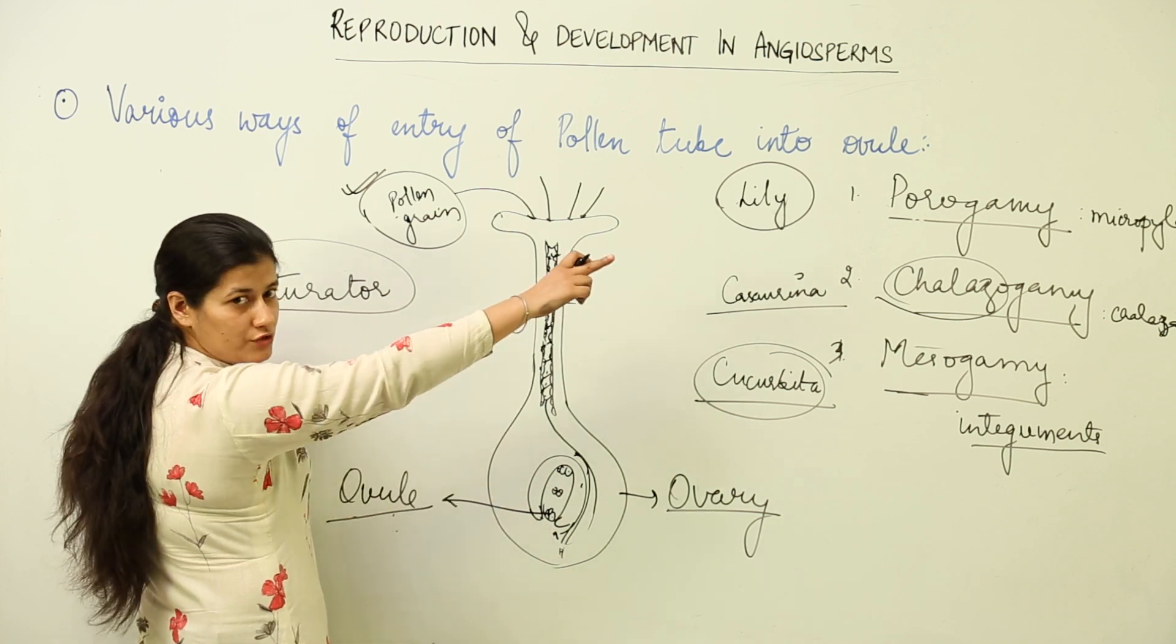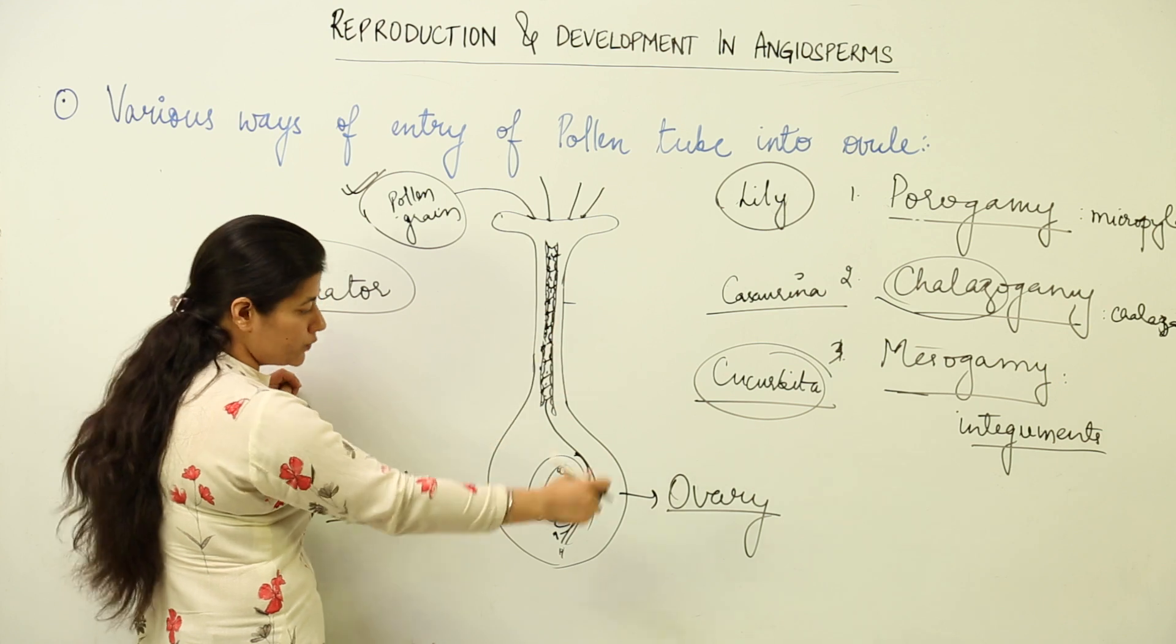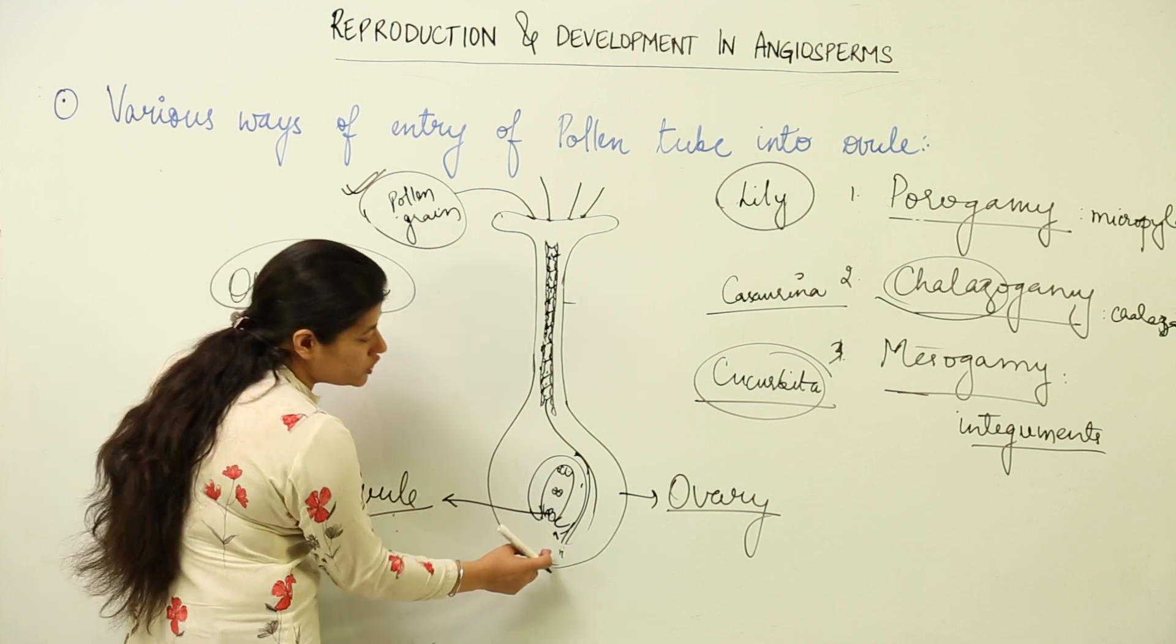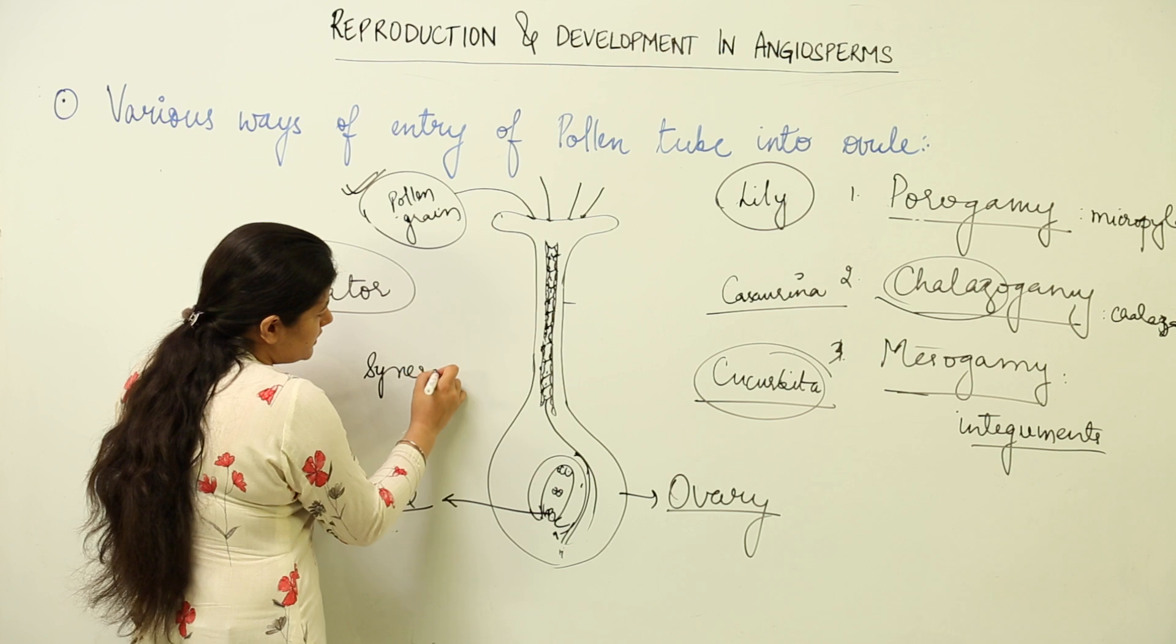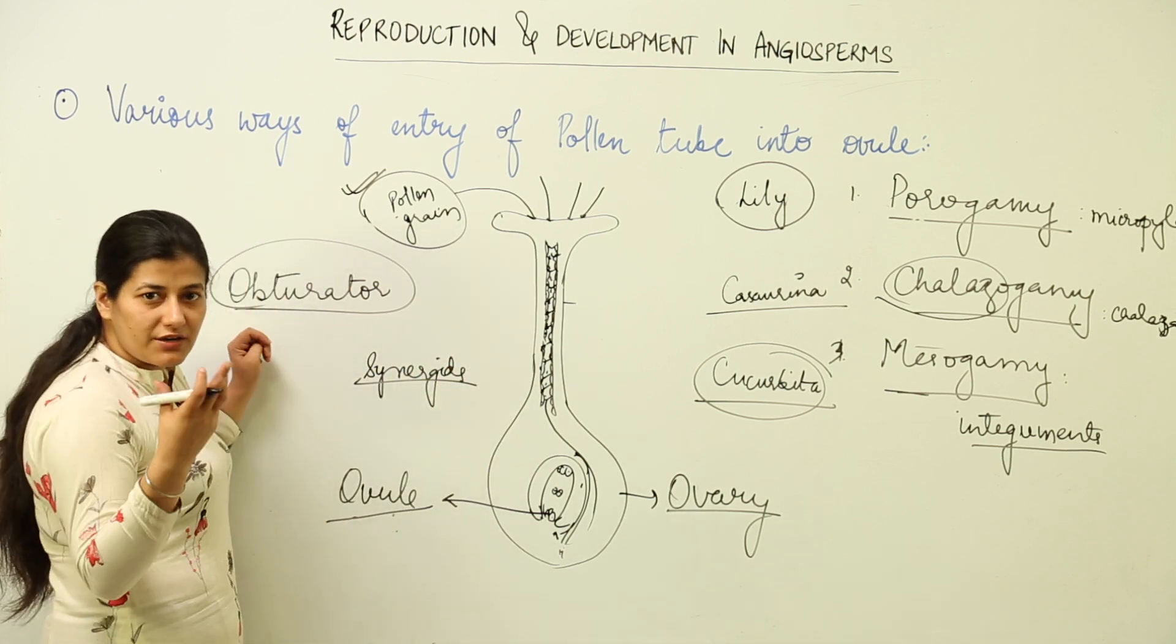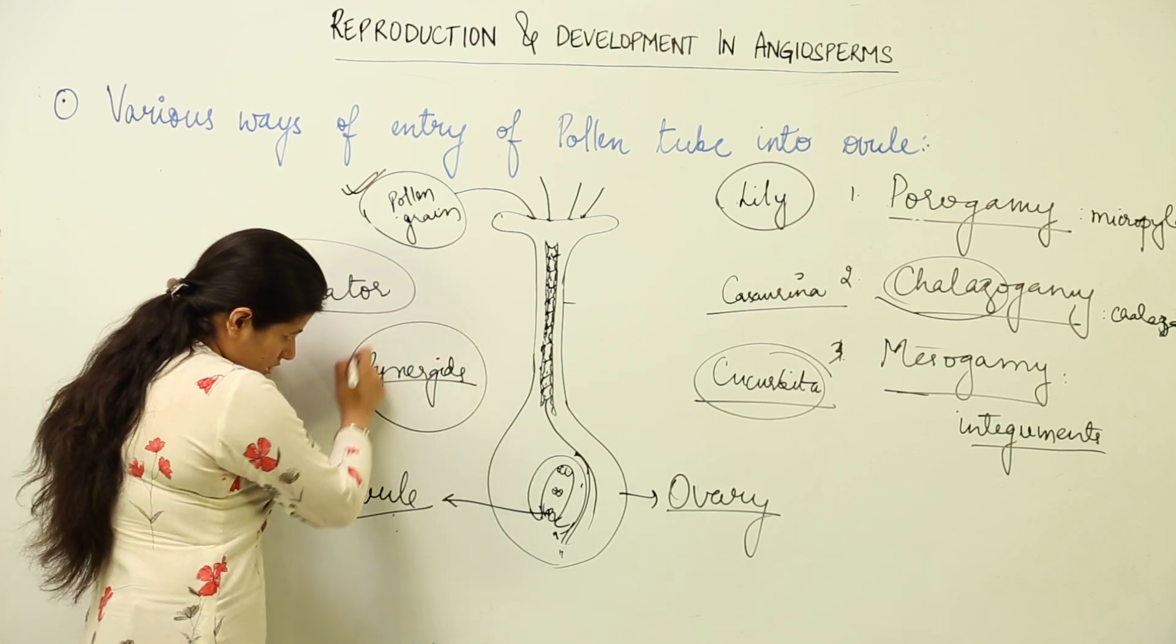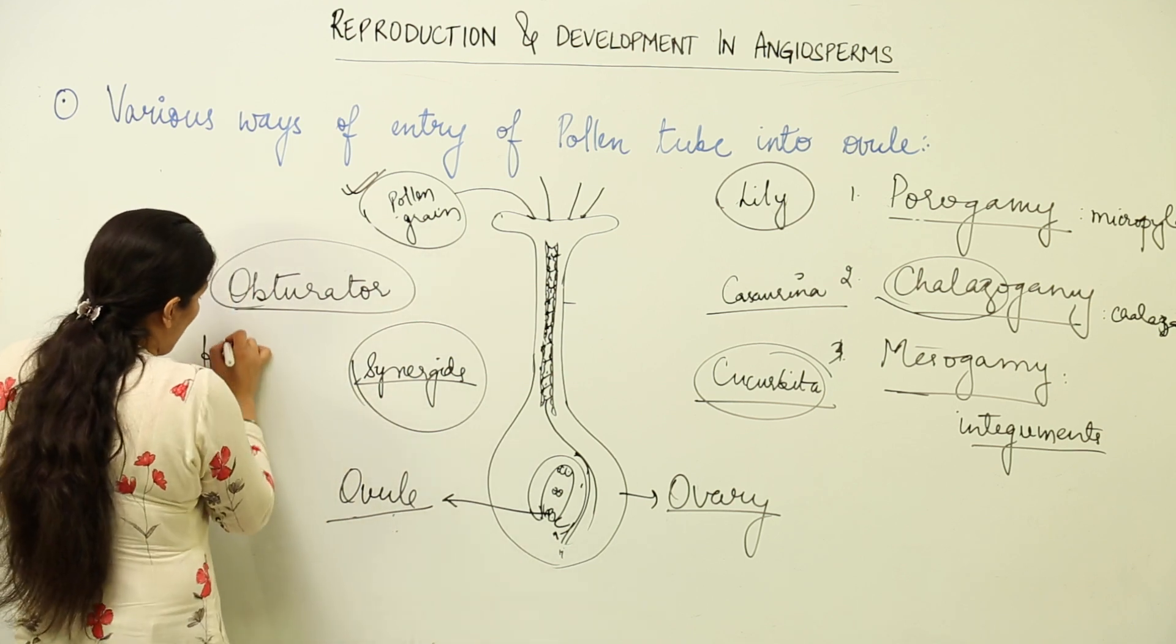Once the pollen tube has reached the micropyle in the porogamous method of entry, it comes in contact with the synergids. Synergids are otherwise known as help cells. These synergids release a chemical and bring the pollen tube towards themselves. When the pollen tube comes and reaches the synergids, with the help of filiform apparatus.